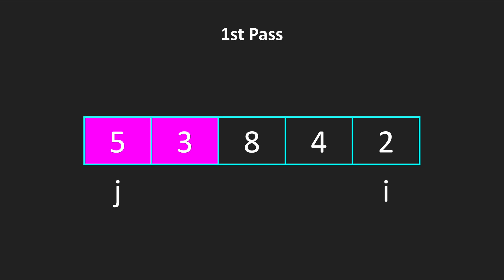So for example, in this case, we are comparing j and j plus 1. If the value of j is more than the value of j plus 1, then we are swapping these two elements. So for example, 5 is more than 3, we are swapping these two elements.